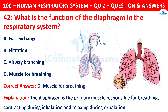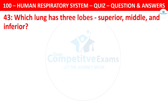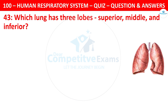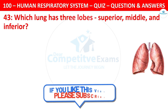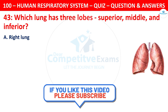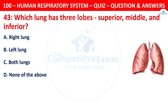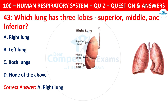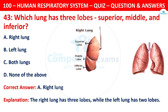Question 43: Which lung has three lobes — superior, middle, and inferior? The options are: right lung, left lung, both lungs, or none of the above. The correct answer is A — right lung. The right lung has three lobes, while the left lung has only two lobes.